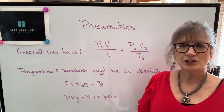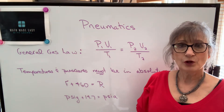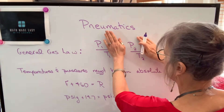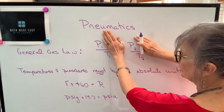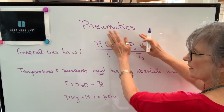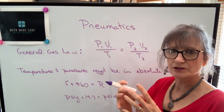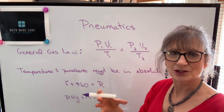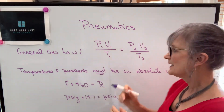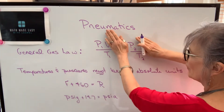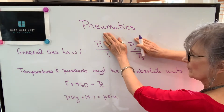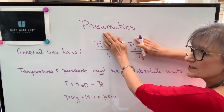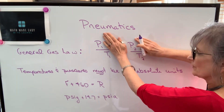If we have a situation where the volume isn't changing — for example, if you have gas in a closed cylinder and the volume isn't allowed to expand or contract — then we have what's called Gay-Lussac's Law, and it's a direct proportion. The pressure will increase as the temperature increases.